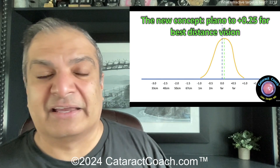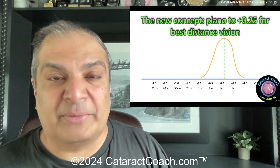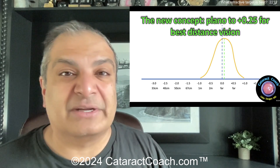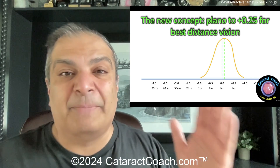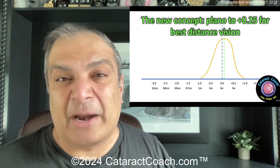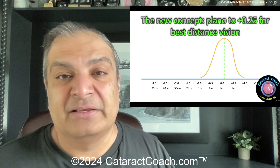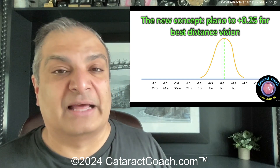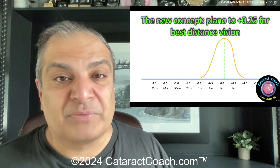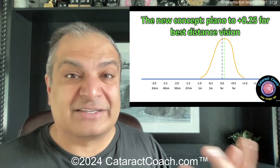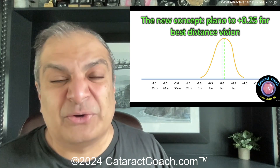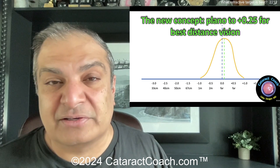The new dogma is: if you want plano or emmetropia, aim for zero — aim for plano — and you can certainly achieve that outcome. Our bell curve distribution is now a lot narrower, so we have better predictability. We're talking mostly about monofocal lenses or a simple kerato-refractive procedure — not a presbyopia LASIK type of ablation, but rather a simple ablation.